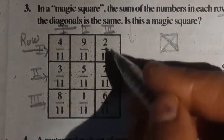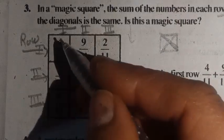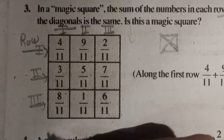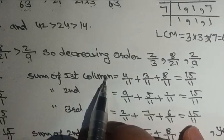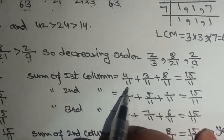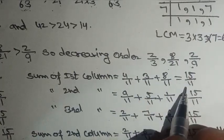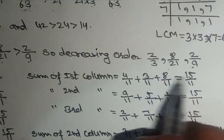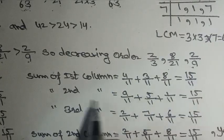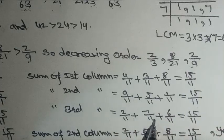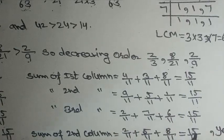Now let's find the sum of each column. First column: 4/11 + 3/11 + 8/11. Like fractions, so 4 + 3 + 8 = 15, giving 15/11. Second column elements also give 15/11. Third column elements also give 15/11.